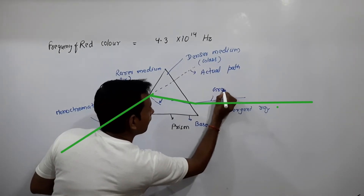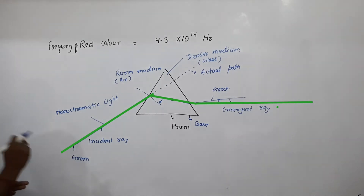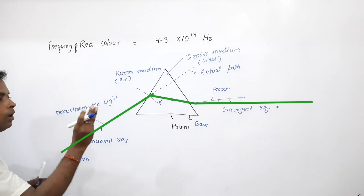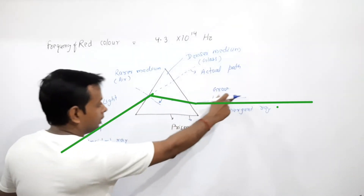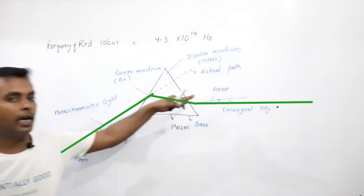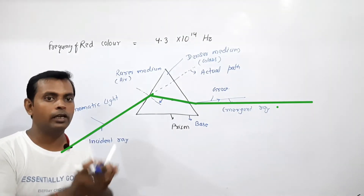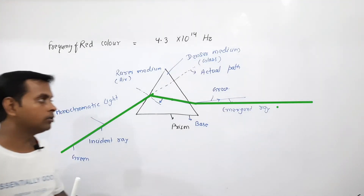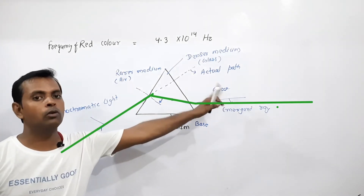Similarly, if we pass any other monochromatic color — green, yellow, blue, or any other — through the prism, each passes singly and emerges as the same color without changing. They do not disperse into different colors, because monochromatic light is made up of a single wavelength, so only a single color passes through it.